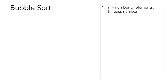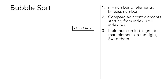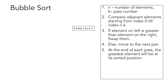So let's see how bubble sort works. Suppose we are given an array with n number of elements and the variable k represents the pass number, where the range of k is from 1 to n-1. For every pass of bubble sort, we will compare adjacent elements starting from index 0 till index n-k, making n-k comparisons. In each comparison, if the element on the left is greater than the element on the right, we will swap them. Otherwise we move on to the next pair, and at the end of each pass the greatest element will be at its sorted position. We repeat this process until the array is sorted.